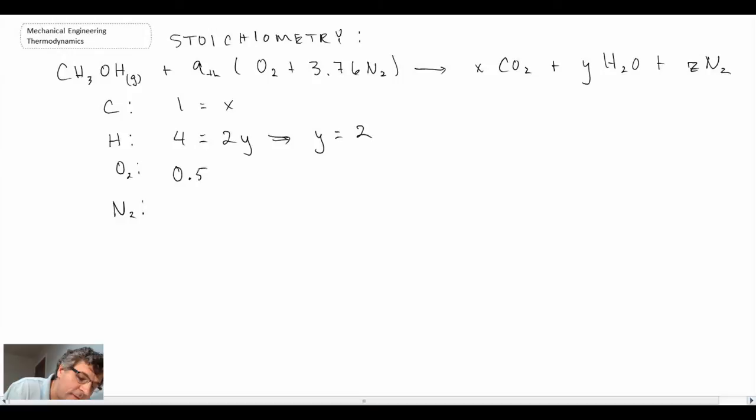For diatomic oxygen, we have 0.5 in the alcohol. And given that we know X and Y, we can solve for this. And therefore the theoretical amount of air here is 1.5. And finally, for diatomic nitrogen, we get this. So we can rewrite our chemical reaction as follows.